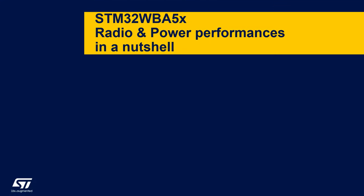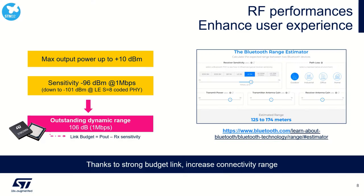As we are dealing with a wireless product, we must consider two strong features: radio performance and power performance. The STM32WBA55 achieves output power up to 10 dBm. The RX sensitivity is -97 dBm at 1 Mbit/s, resulting in an outstanding dynamic range of 106 dB — an overall link budget of 106 dB, enabling very strong and robust connectivity.